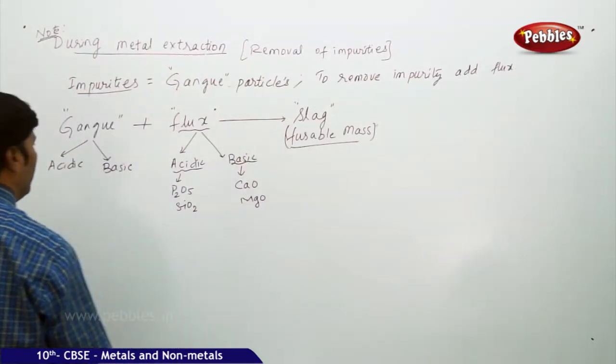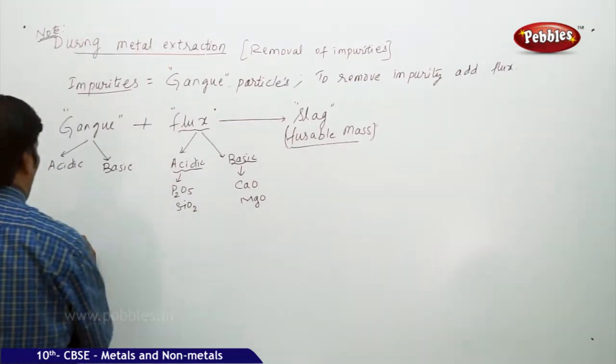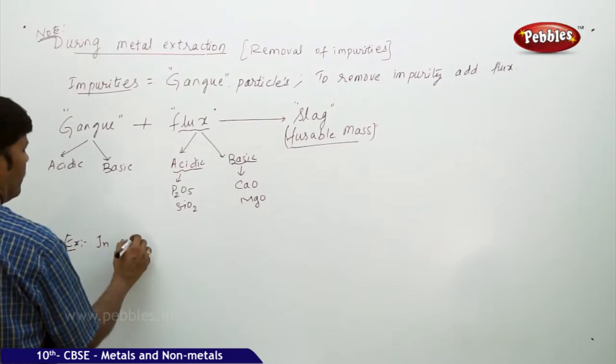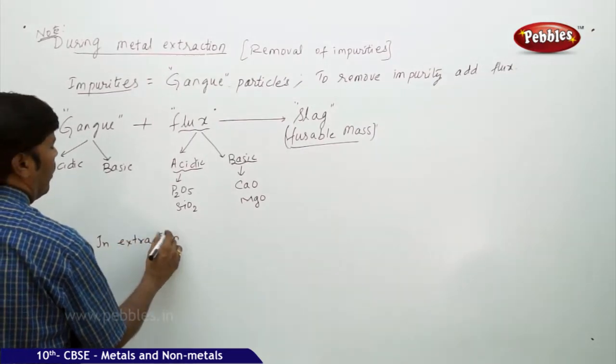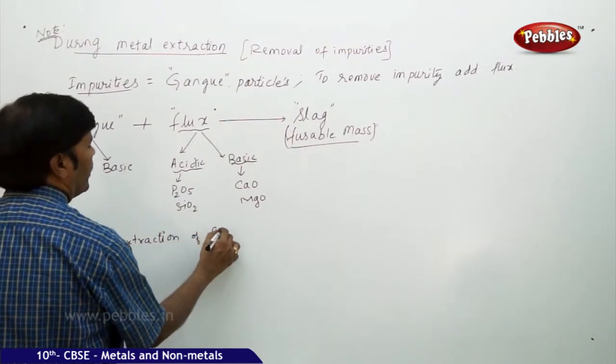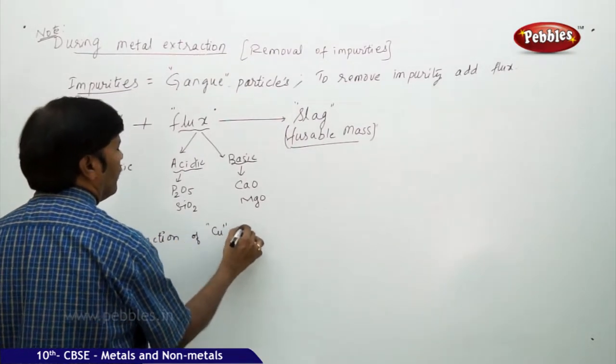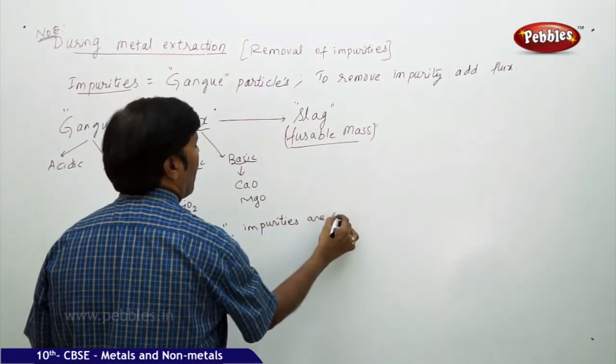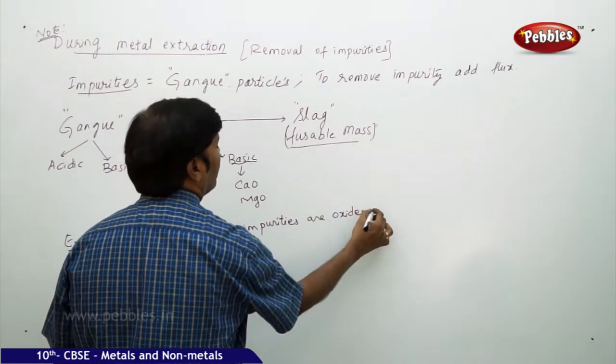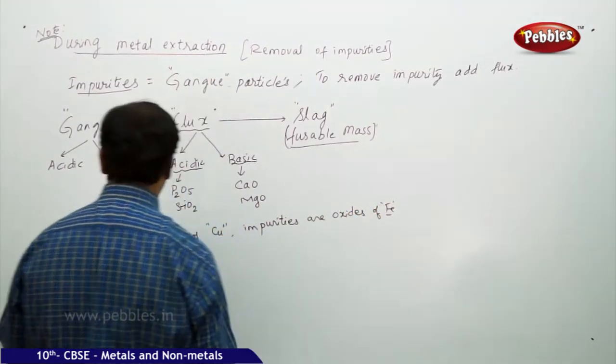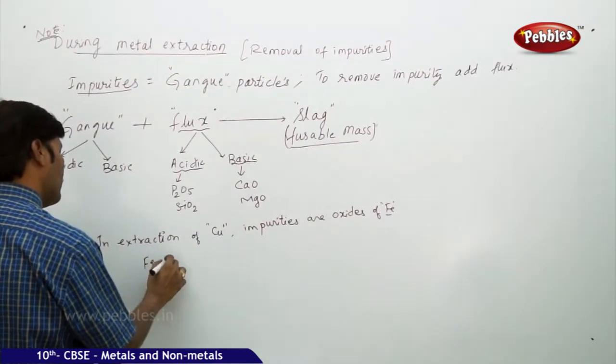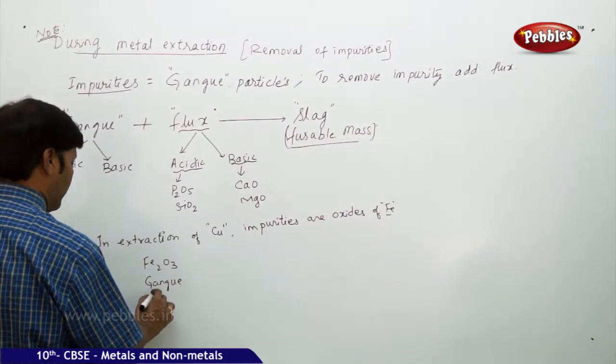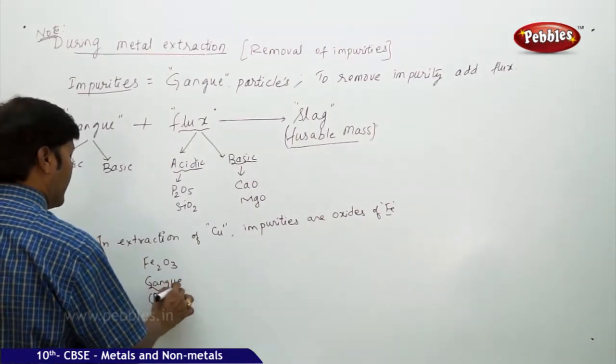It depends on what kind of interaction we are doing. For example, you can take in extraction of, in the extraction of copper, impurities are oxides of iron. If Fe2O3 is the gang particle, it is basic, gang is basic here.